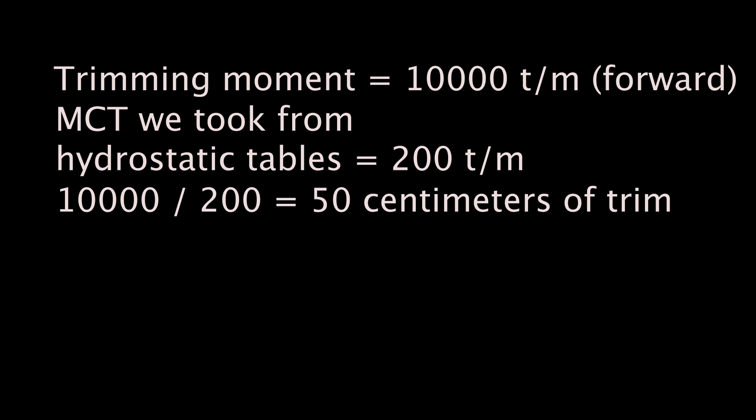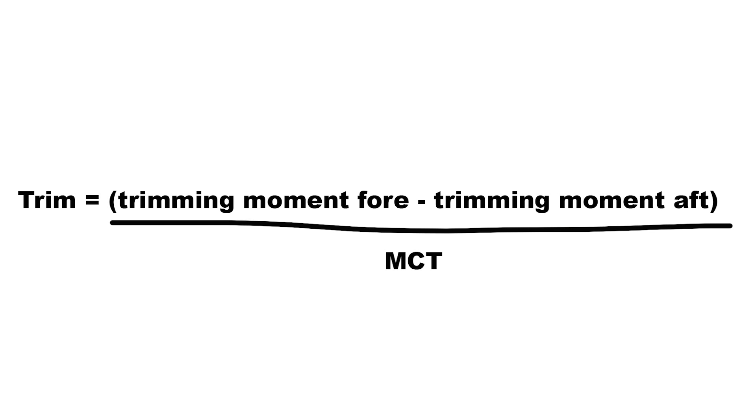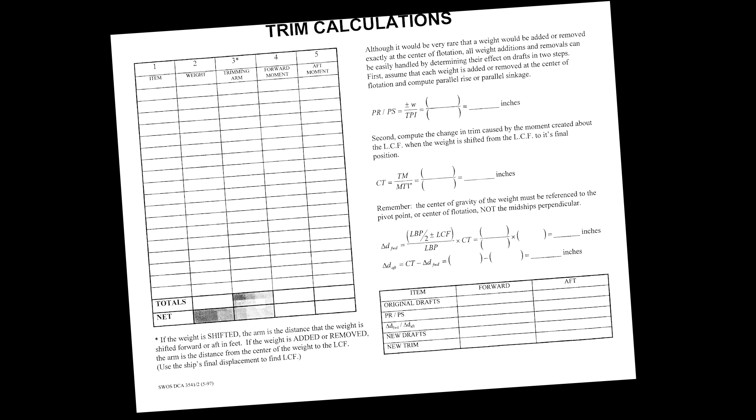You can always find MCT in the hydrostatic tables. For each middle draft reading, there is a corresponding MTC. To calculate trim, you have to deduct trimming moment forward from trimming moment aft and divide by MTC. To calculate the trim, you should know what is your total trimming moment forward and what is your total trimming moment aft. Then you know the difference, and this difference should be divided by MCT.